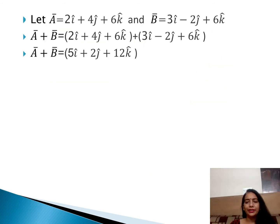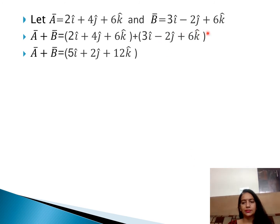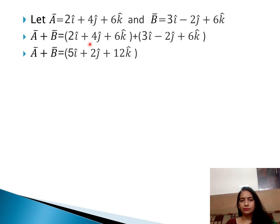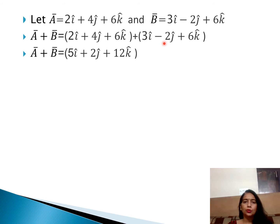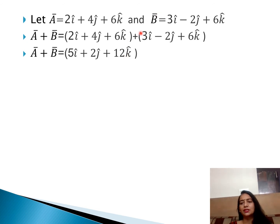Let us take an example for addition of vectors. Let vector a equal to 2i plus 4j plus 6k, and vector b equal to 3i minus 2j plus 6k. We add these two vectors: a plus b. The i terms are added with i terms, j terms with j terms, and k terms with k terms. So a plus b equals 5i plus 2j plus 12k — that is simple component-wise addition.